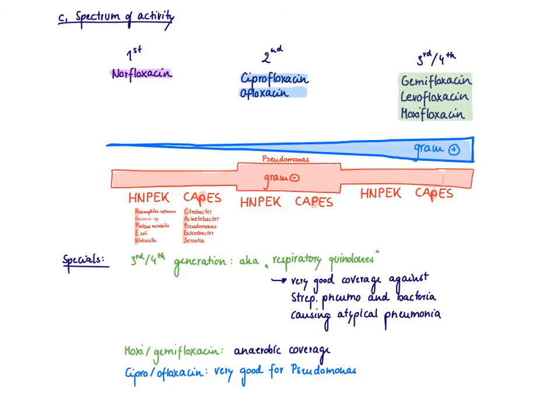Now I want to talk about the spectrum of activity of these quinolones. For the spectrum, it's worth putting them in generations. Norfloxacin is first generation, Cipro and ofloxacin second generation, and then we have the newer ones, which are also referred to as third or fourth generation: gemifloxacin, levofloxacin, and moxifloxacin.